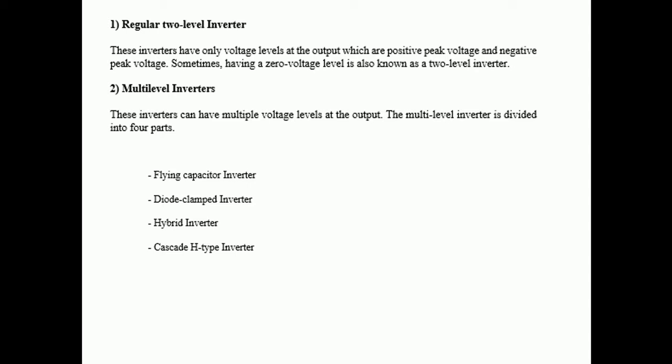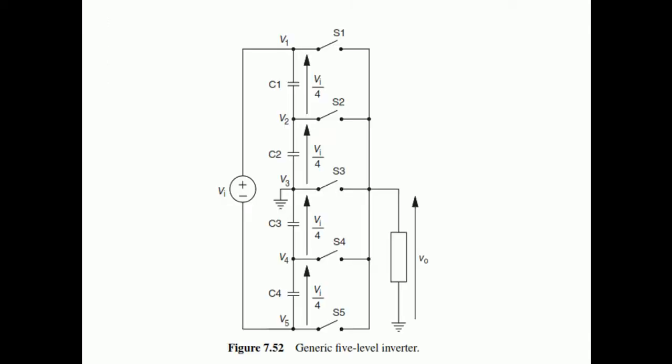The types of multilevel inverters are: the flying capacitor inverter, the diode clamp inverter, the hybrid inverter, and the cascaded H-bridge. We will discuss the diode clamp first, then the flying capacitor, and then the cascaded H-bridge. This is the basic theme of the multilevel inverter.